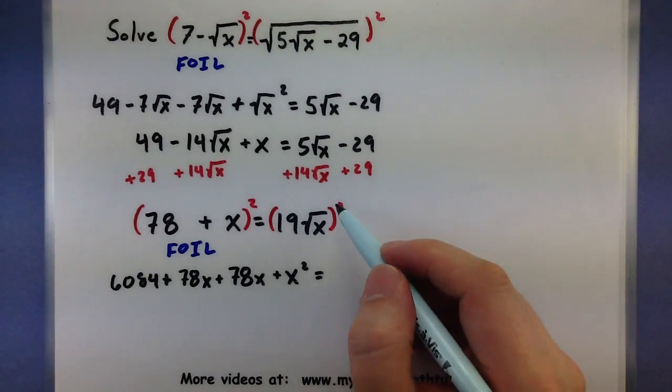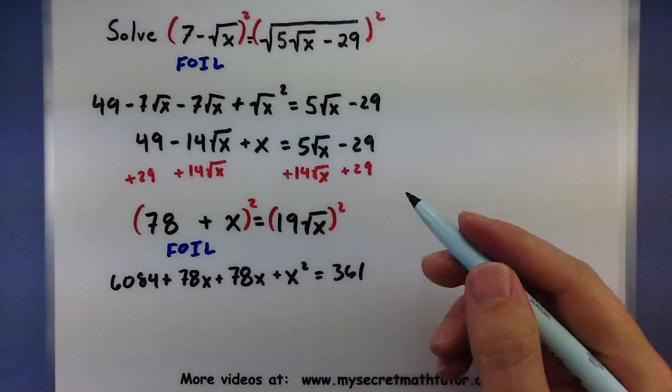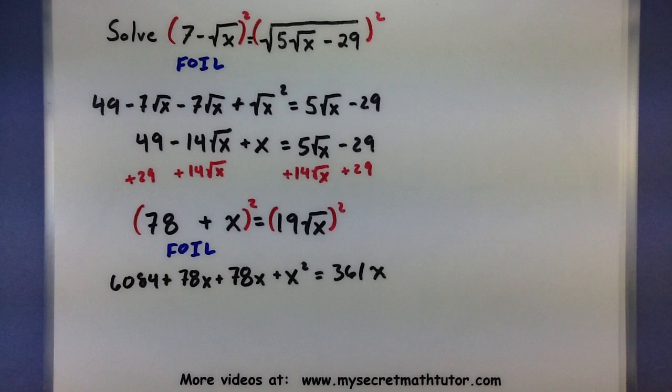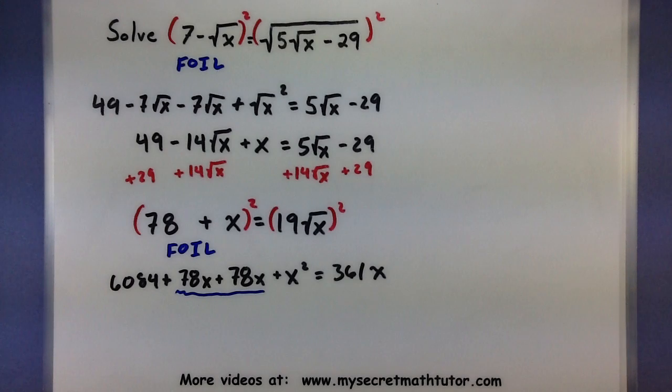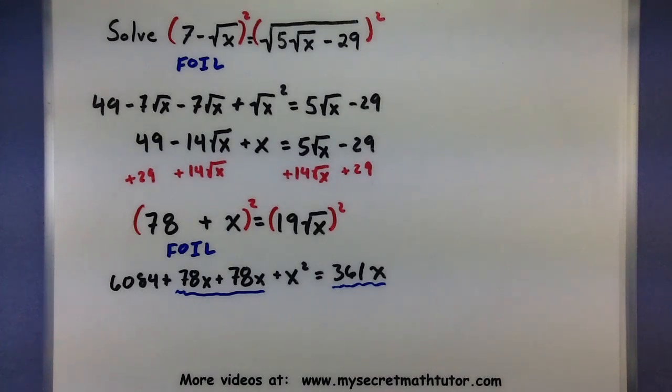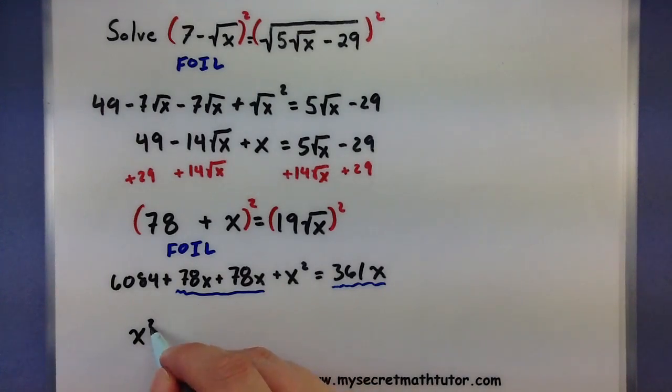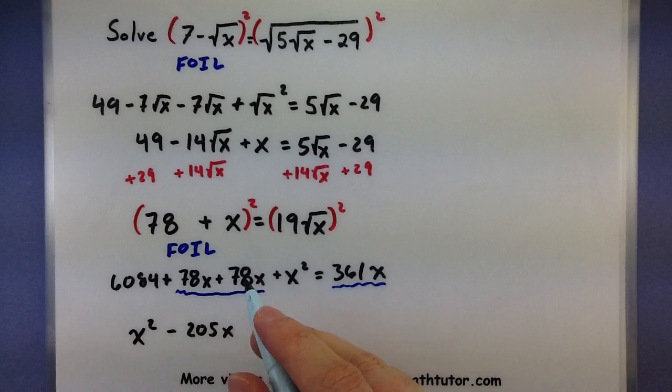So, I'll have to square both numbers in here. 19 times 19. 361. Square root of X. X. This one looks like it's going to be quadratic. And there's a lot of things in here that I can go ahead and combine. For example, I can put these 78X's together and get 156X. And then I could actually subtract 361X from both sides. The rest, I think, is just going to be a lot of rearranging.